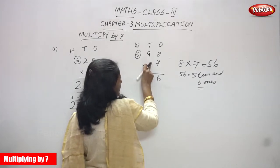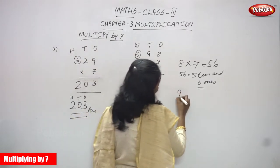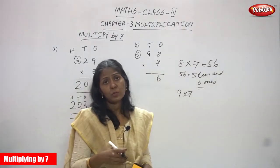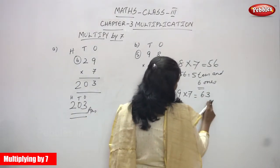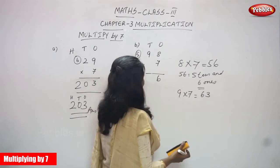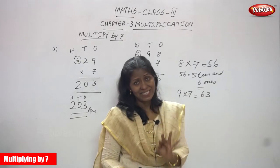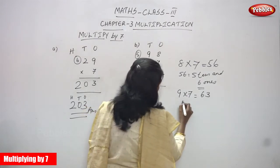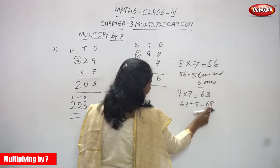Now I am multiplying the tens place value by 7. The number is 9 into 7. You must say the 7th table up to 9: 8 sevens are 56 and 9 sevens are 63. So the answer is 63 plus 5 carryover — that is 64, 65, 66, 67, 68. So 63 plus 5 equals 68. Now 68 means 8 tens and 6 hundreds.